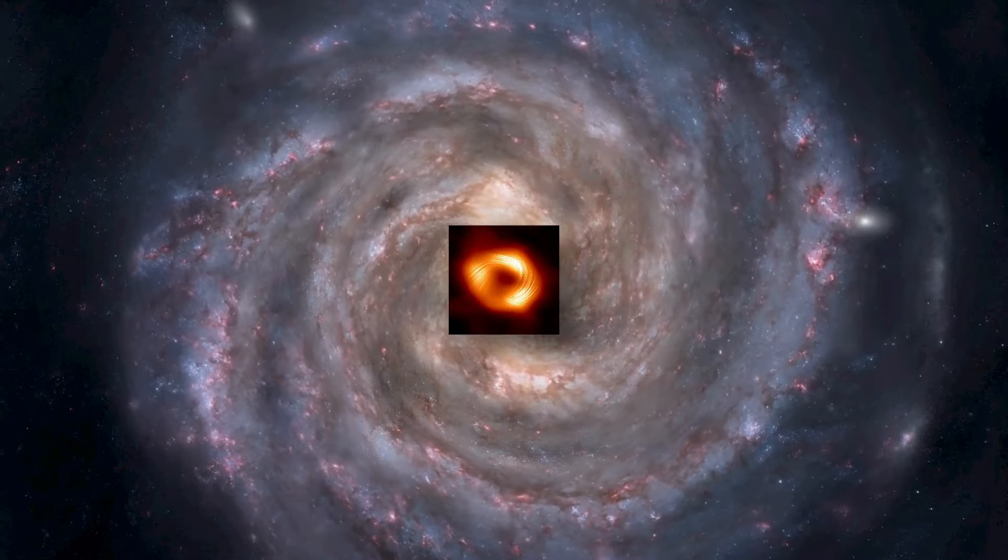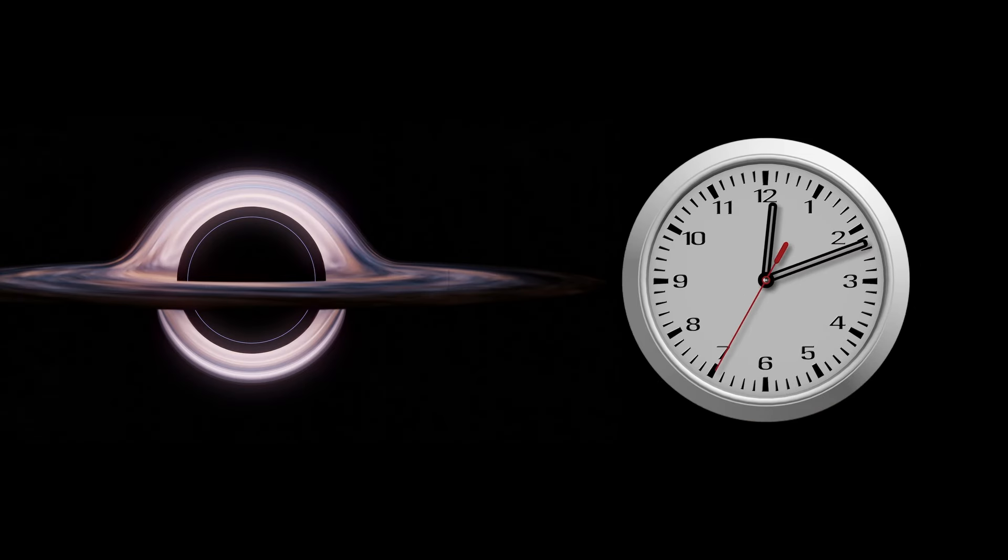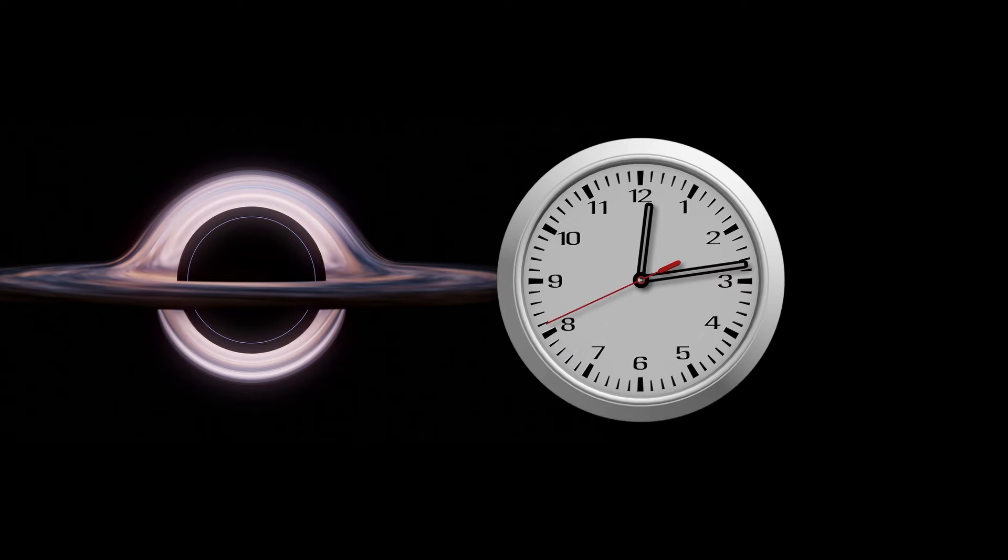The supermassive black hole at the center of the Milky Way is called Sagittarius A-star. Time slows down near a black hole due to the effects of intense gravity. This was predicted by Einstein.